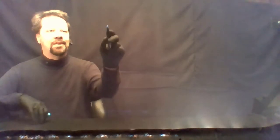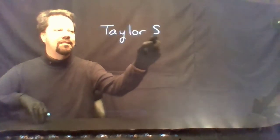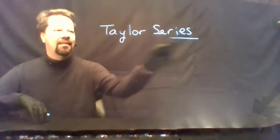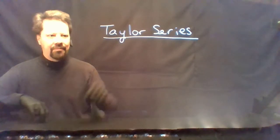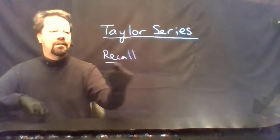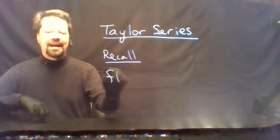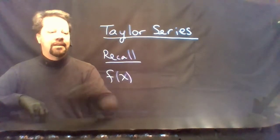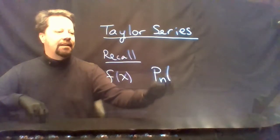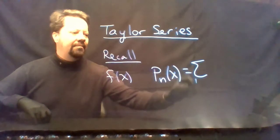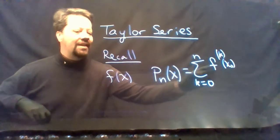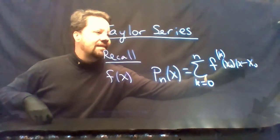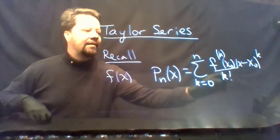Hi, I'm Jeff Groh and this is Calculus 2. Today we're going to talk about Taylor series. Earlier in this module we talked about Taylor polynomials. Taylor polynomials only applied if a function had enough derivatives. If you had some function f, the nth degree Taylor polynomial was the sum as k goes from zero to n of the kth order derivative evaluated at some center x₀, times x minus x₀ to the power k divided by k factorial.